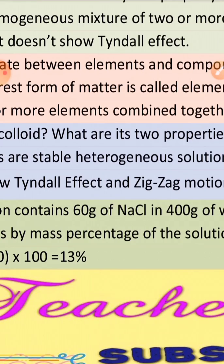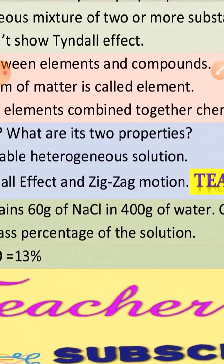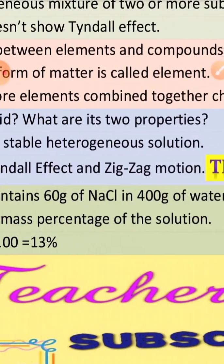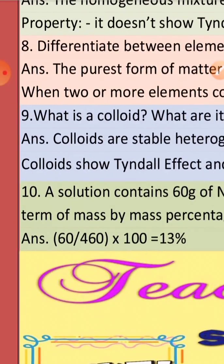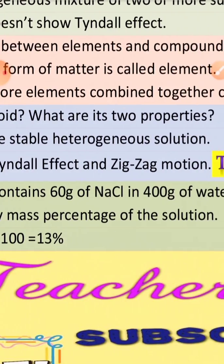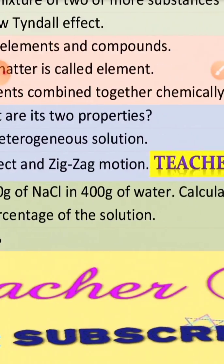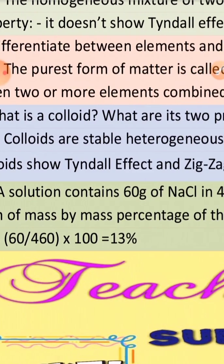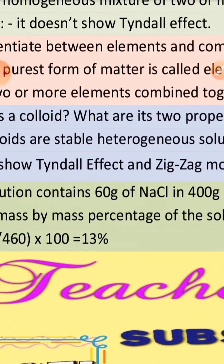The last question: A solution contains 60g of NaCl in 400g of water. Calculate the concentration in terms of mass by mass percentage of the solution. Mass by mass means the mass of solute divided by total mass into 100.